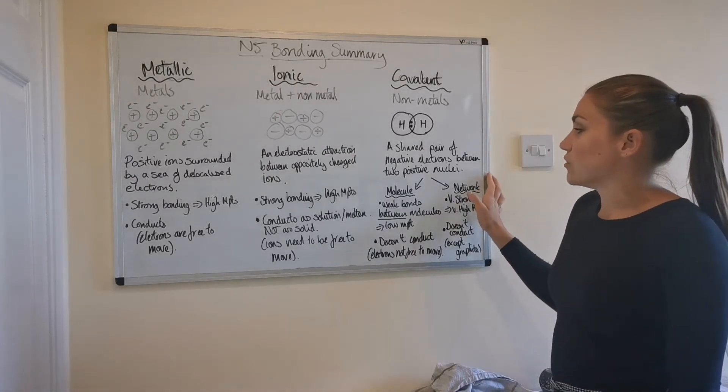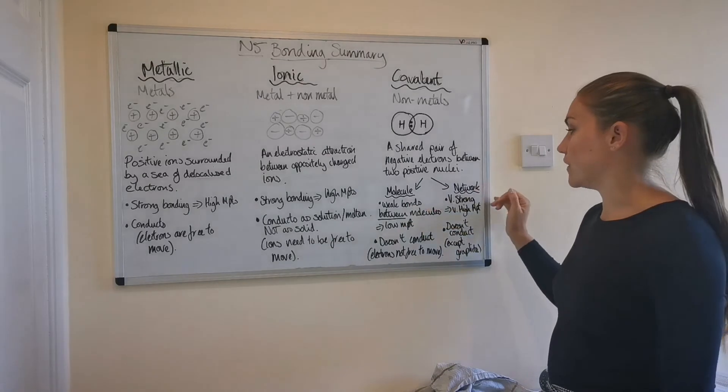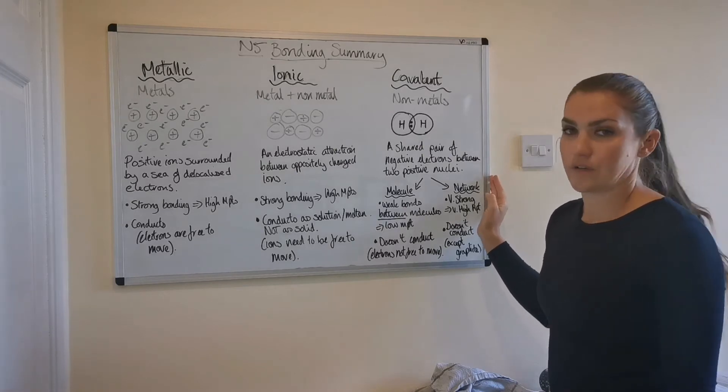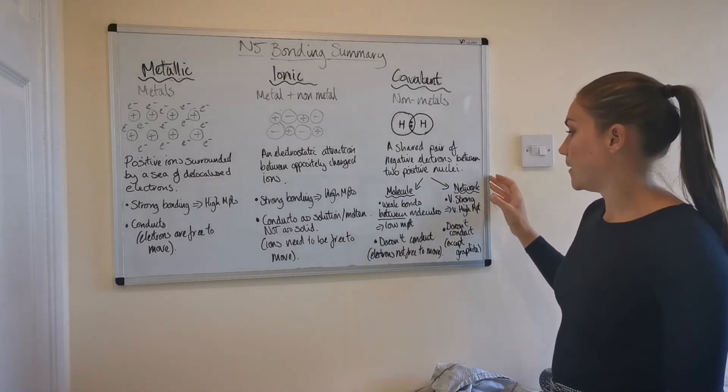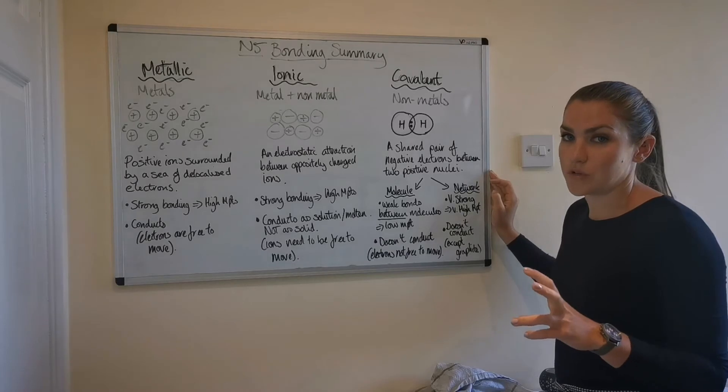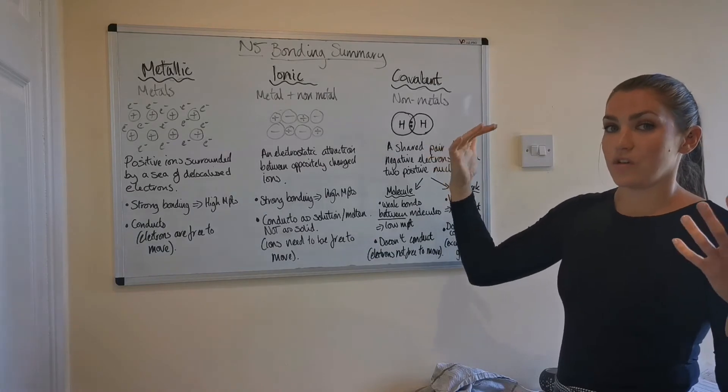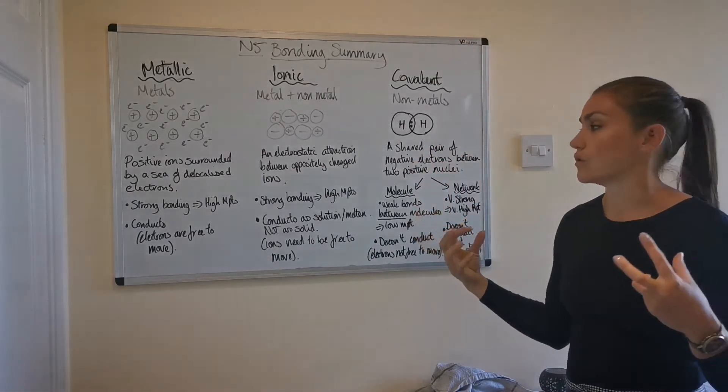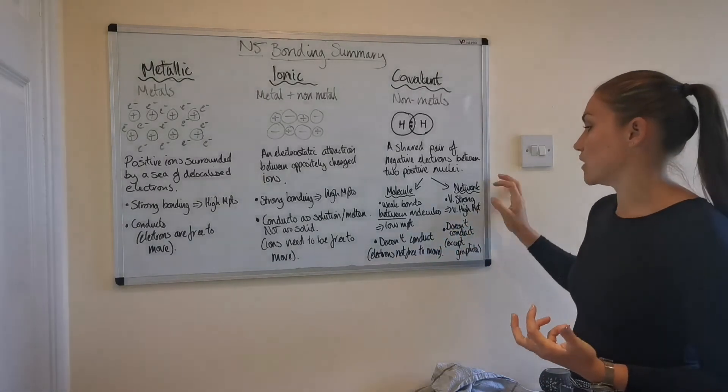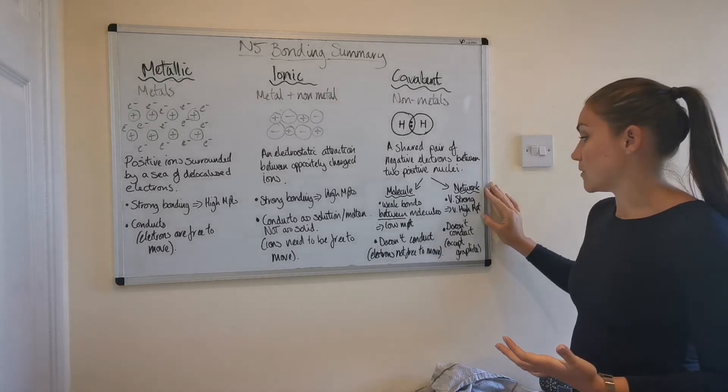So when it comes to covalent bonding in terms of the structures, it can either become a covalent molecule or a covalent network. And you should probably have seen pictures of these by now. But if not, you can always have a Google of them and they'll come up. But covalent networks, we start with them first. They are big, massive structures where all of the atoms are covalently bonded to each other. Covalent bonding is extremely strong. And because in these big, massive covalent network structures, there's so many covalent bonds between atoms. In order to melt it, you would need to put in a lot of energy to break all those bonds. So covalent networks have some of the highest melting and boiling points you'll see in chemical substances.